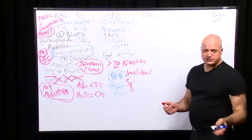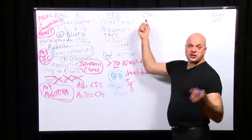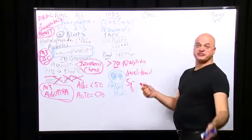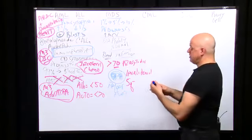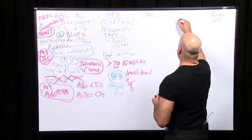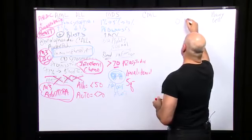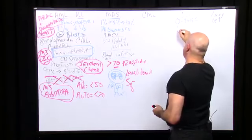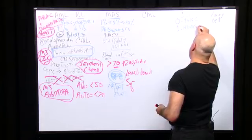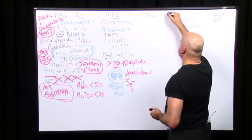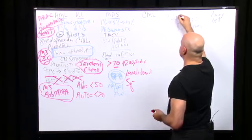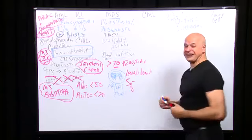Chronic leukemias are called chronic because they kill you much slower — you can go on with them for years. With stage 0 CLL, which is just a high white count, or stage 1 which has positive lymph nodes, average survival is 10 to 12 years.